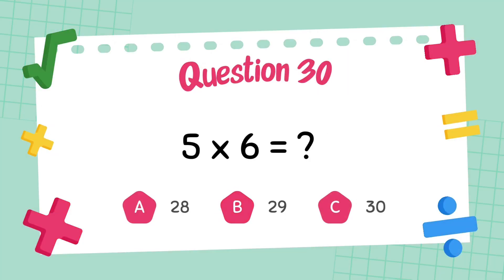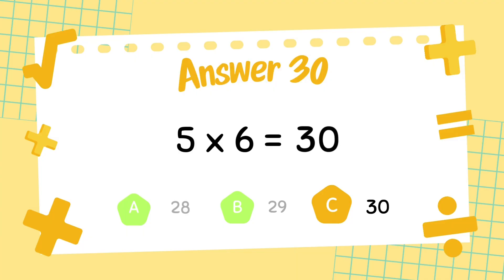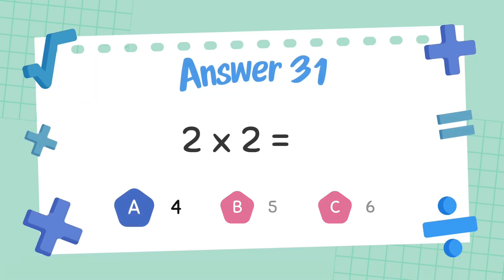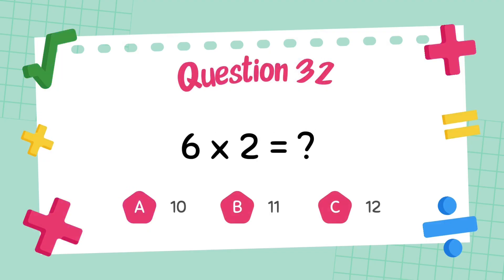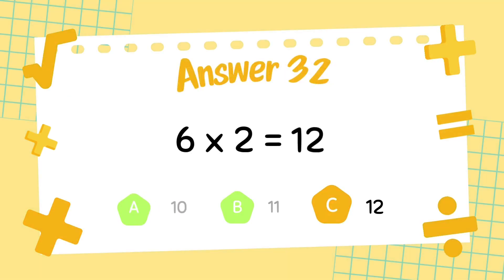What is 5 multiply 6? The answer is 6. The answer is 6. What is 6 multiply 2? The answer is 4. What is 6 multiply 2? The answer is 2.